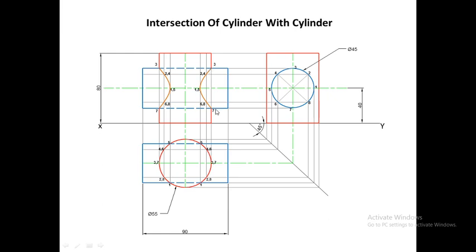We have completed the solution — the intersection of the vertical cylinder with the horizontal cylinder. These curves are called the curves of intersection. To summarize the procedure: first draw the top view, front view, and side view of the vertical cylinder; second, draw the front view, top view, and side view of the horizontal cylinder with given dimensions; third, mark the points of intersection in the side view; fourth, mark points in the top view; and finally project them into the front view and draw curves of intersection.